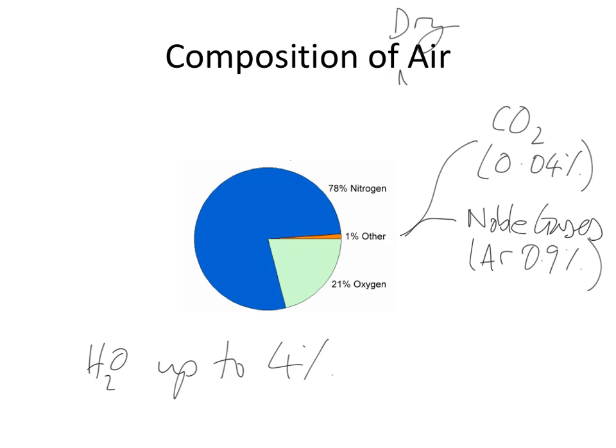Now I marked an IGCSE question recently on this topic, and students who knew all the facts about air dropped marks because they got muddled between the difference between a compound and an element. It is important that you realize that nitrogen is an element, even though it's made up of two atoms making the molecule N2, both atoms are the same.